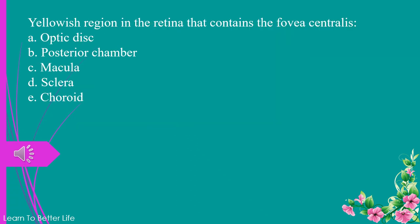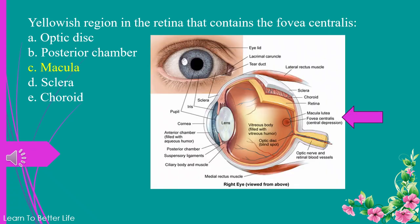Yellowish region in the retina that contains the fovea centralis. a. optic disc. b. posterior chamber. c. macula. d. sclera. e. choroid. The answer is c. macula.